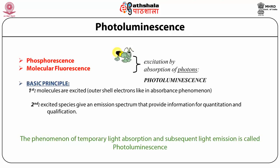Photoluminescence spectroscopy is a contactless, non-destructive method of probing the electronic structure of materials. Light is directed onto a sample where it is absorbed and imparts excess energy into the material in a process called photo-excitation. One way this excess energy can be dissipated by the sample is through the emission of light, or luminescence.